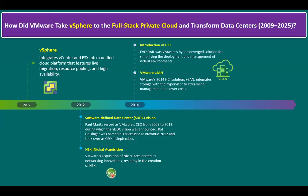Coming to 2014, VMware introduced HCI — hyper-converged infrastructure. Evo Rail was VMware's hyper-converged solution for simplifying the deployment and management of virtual components. The storage virtualization product introduced was vSAN. VMware's 2014 HCI solution, vSAN, integrates storage with the hypervisor to streamline management and lower costs. This innovation made private cloud easier to build, bringing cloud-like simplicity into the data center.